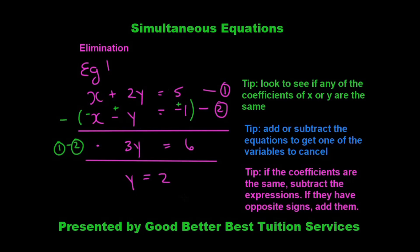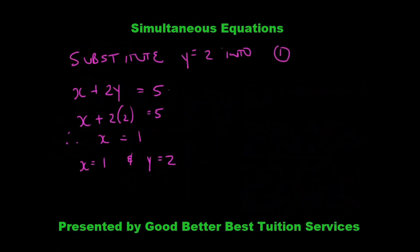Now we substitute y equals 2 into one of the two equations to solve for x. Substituting into equation 1: x plus 2 times 2 is equal to 5, and we find that x equals 1. So x equals 1 and y equals 2.